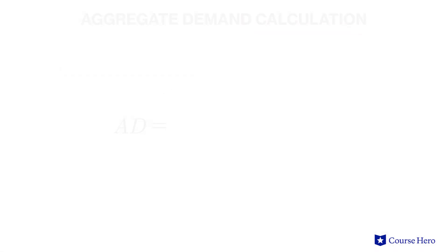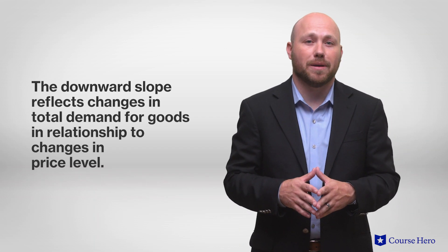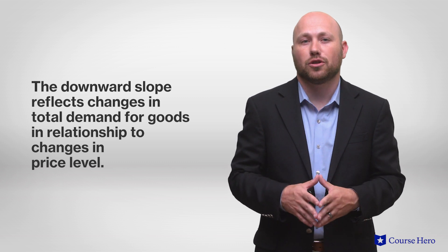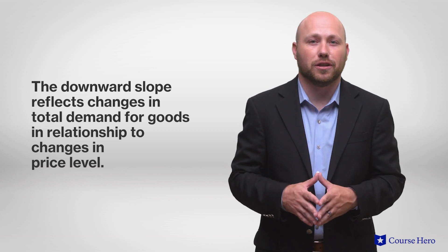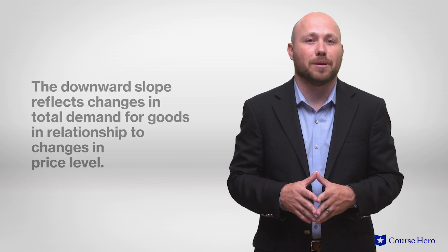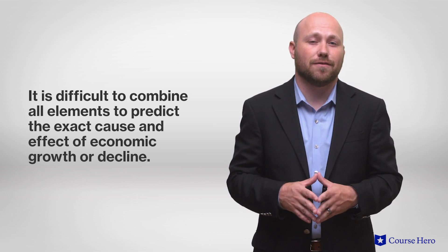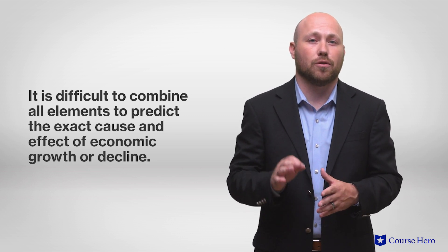Aggregate demand is calculated in a similar way as GDP, as the sum of investment, consumption, government spending, and net exports. The important element to consider about the downward slope of the aggregate demand curve is that it reflects changes in the total demand for goods in relationship to changes in the price level in an entire economy. The aggregate demand equation groups so many different types of spending that it's difficult to combine all of these elements to predict the exact cause and effect of economic growth or decline.